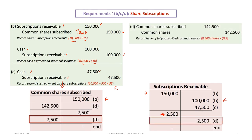We then hit the point where we can issue the fully subscribed shares. We will debit the common share subscribed account — the temporary account — for $142,500, and credit common shares. So the balance gets moved from common shares subscribed into common shares, based on the total of 9,500 shares that are fully subscribed at $15.